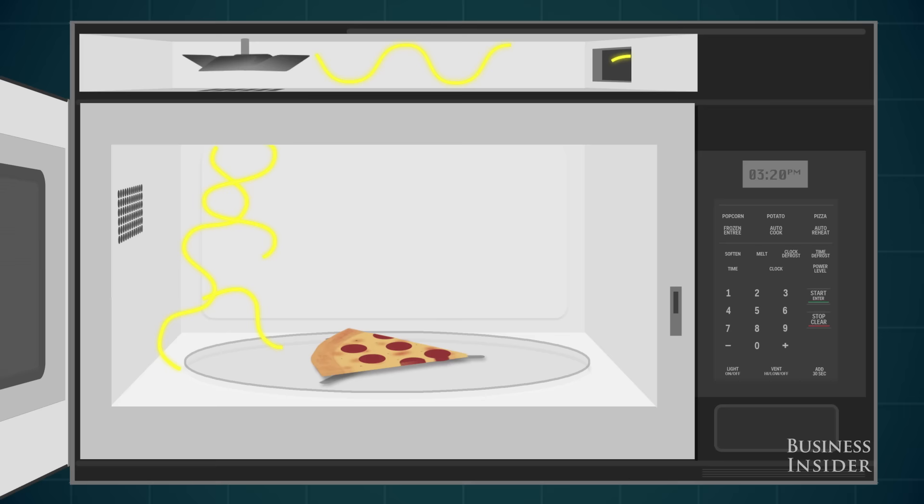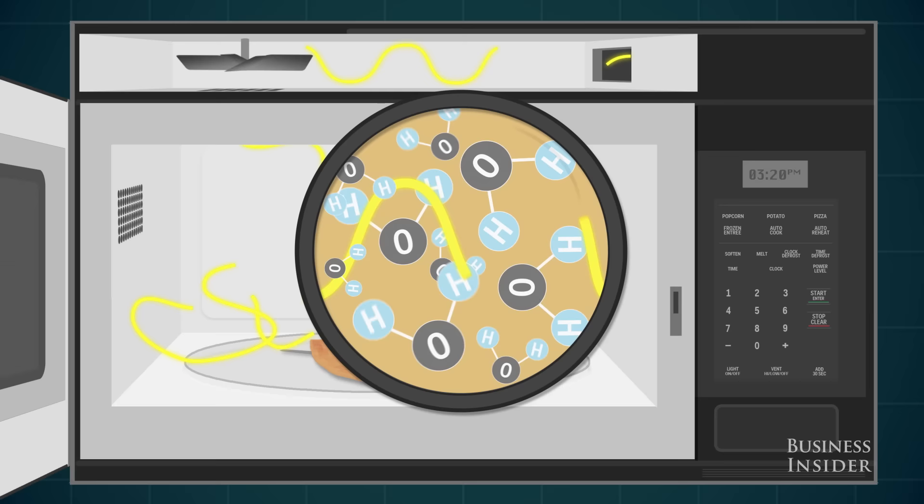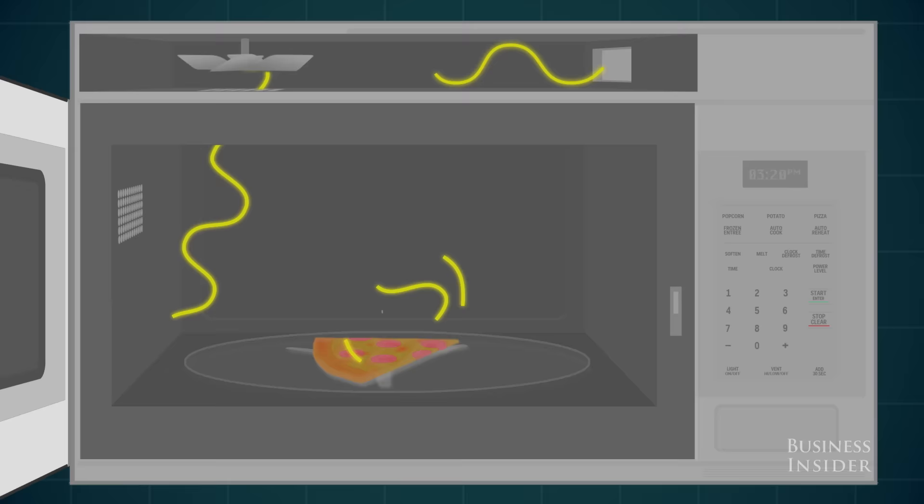The radio waves heat the water inside food by pushing the tiny pieces water is made of to make them go faster. As the pieces move faster, they get hotter, which makes the food warmer.